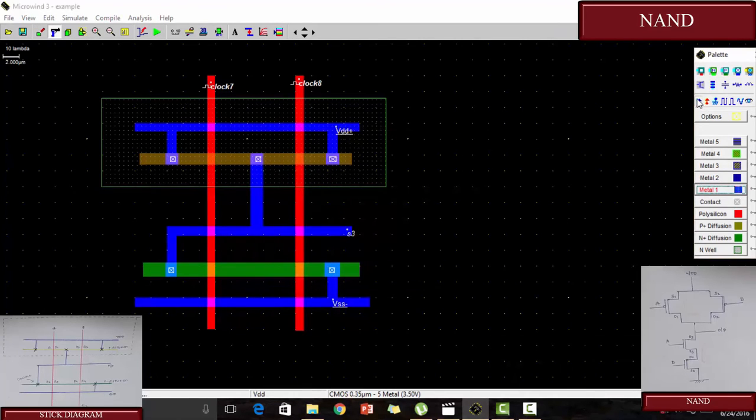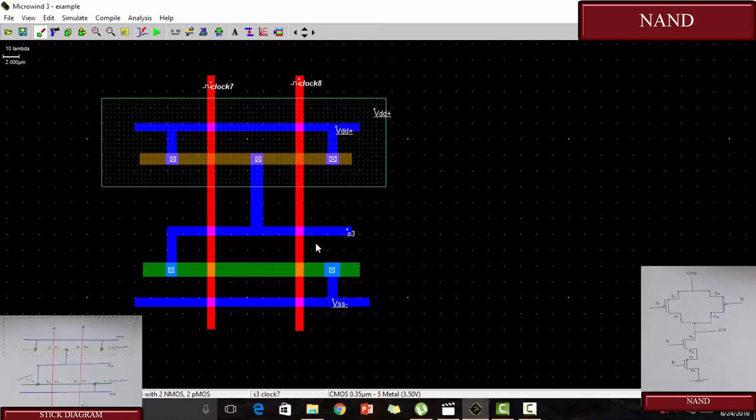VDD is assigned in the N-well. The NAND using CMOS. Now let us run and verify. So this is the layout of the NAND using CMOS. Now we are going to run, so run simulation.